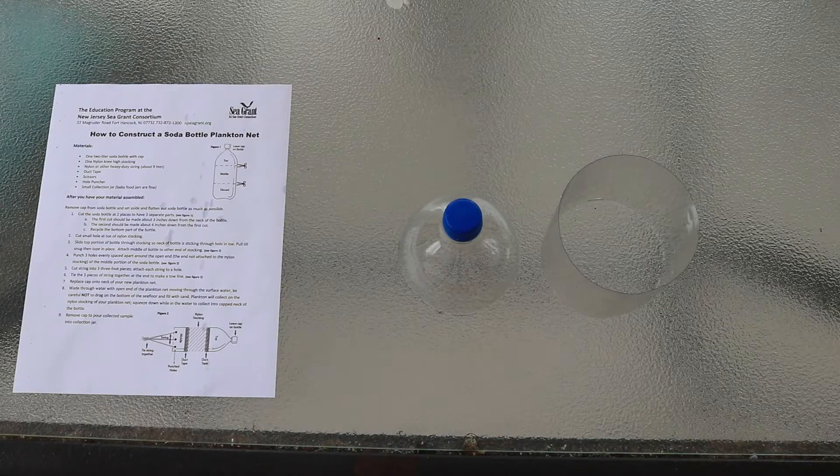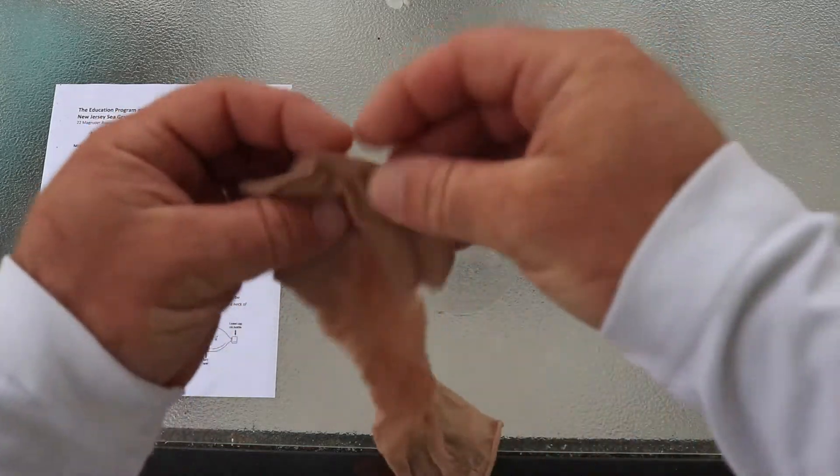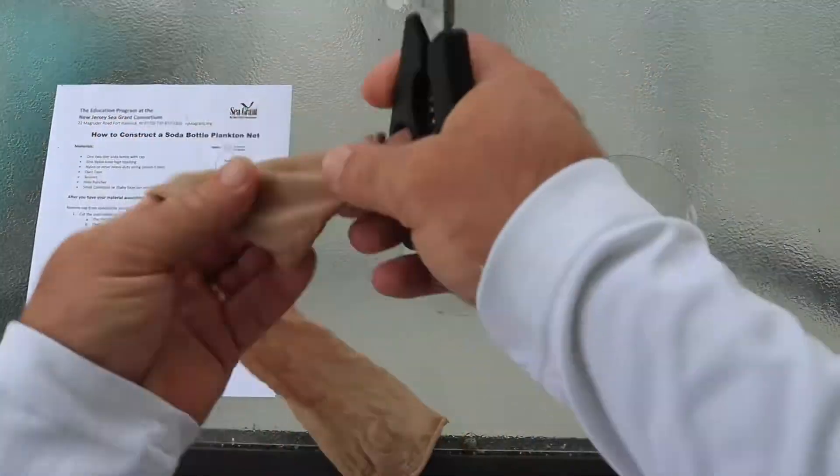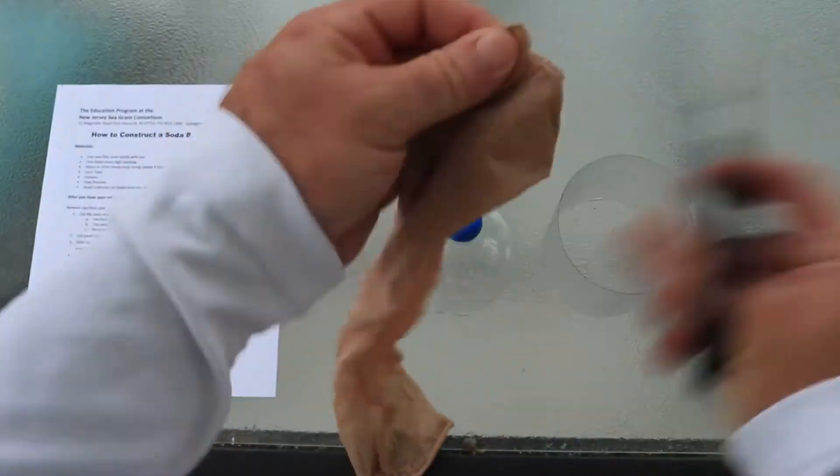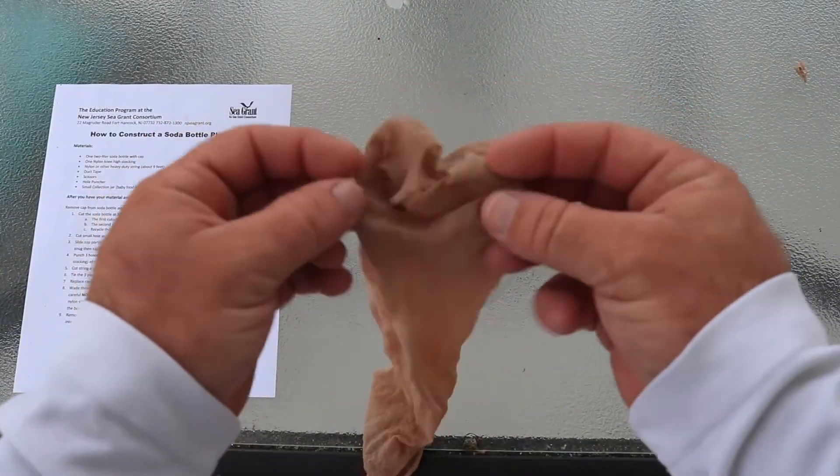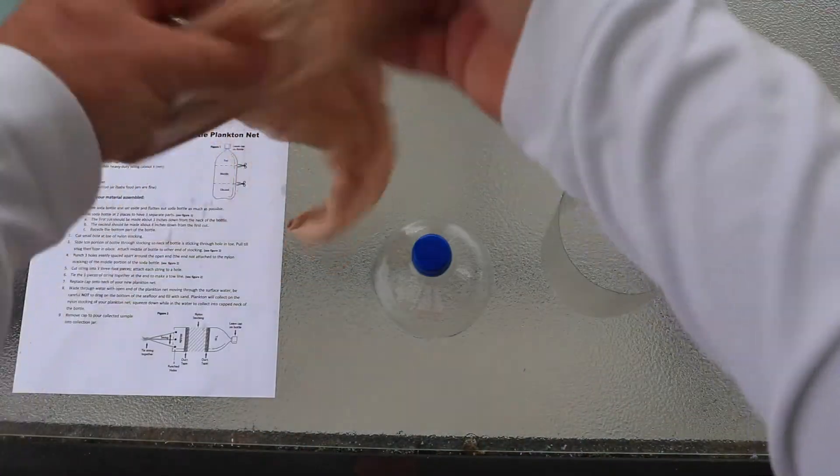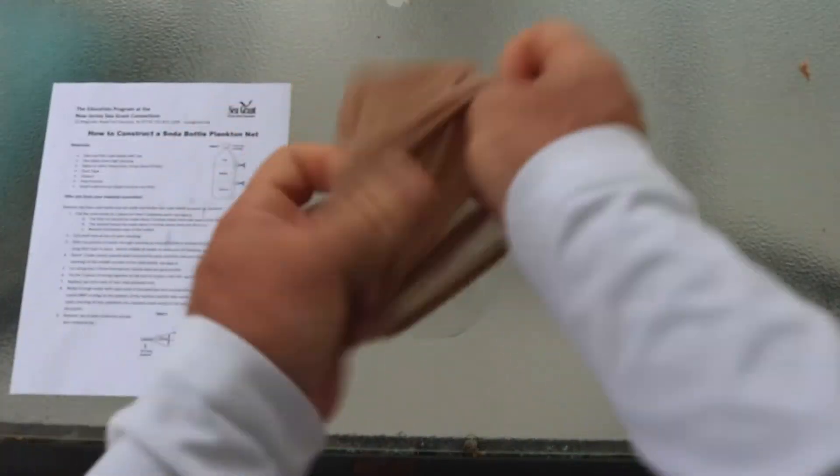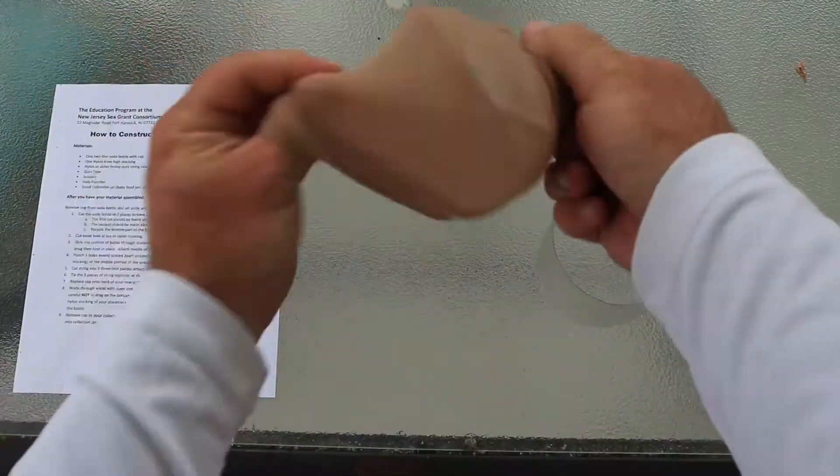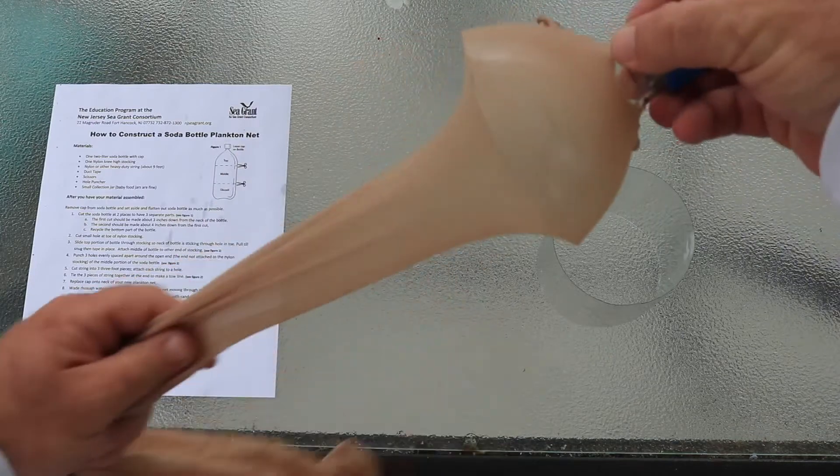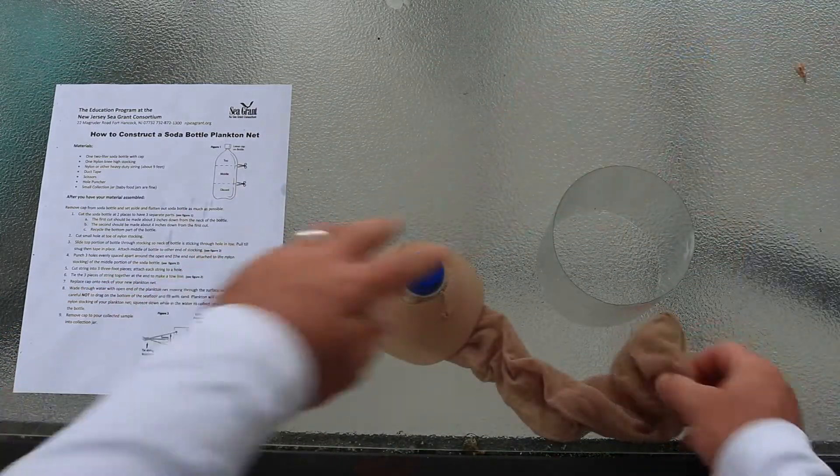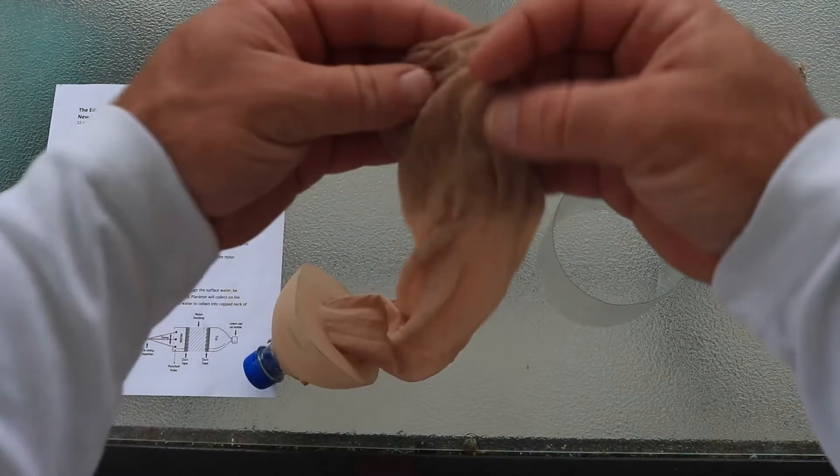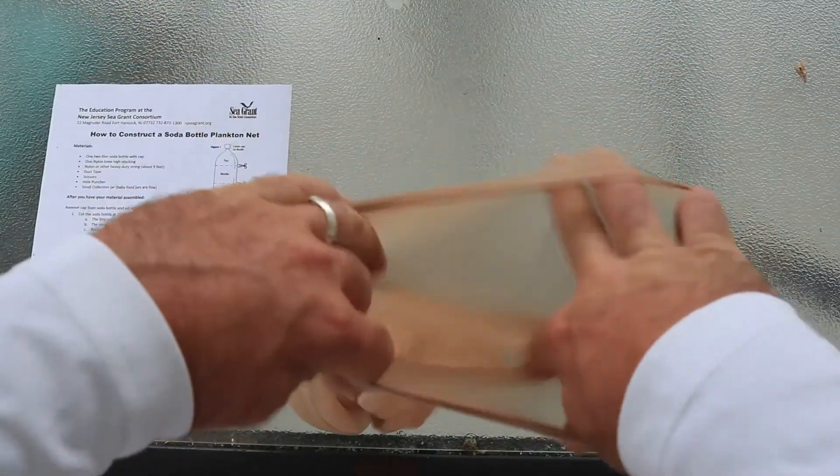The next step is to take the stocking and cut a small hole in the toe. That looks small to me. Now we're going to slide the top of the bottle through the stocking until the neck pokes out the hole. Like so. Now we're going to attach the middle section of the bottle to the other side of the stocking.